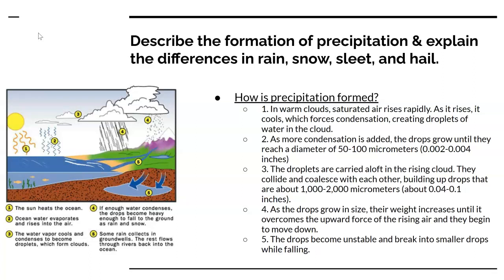How is precipitation formed in the clouds? In warm clouds, saturated air rises rapidly and as it rises it cools, and this forces condensation that creates droplets of water in the cloud. As more condensation is added, these drops continue to grow in diameter. They are carried aloft in the rising cloud, collide and coalesce with each other, and continue to grow in size until their weight overcomes the upward force of the rising air and they fall down as rain or snow.